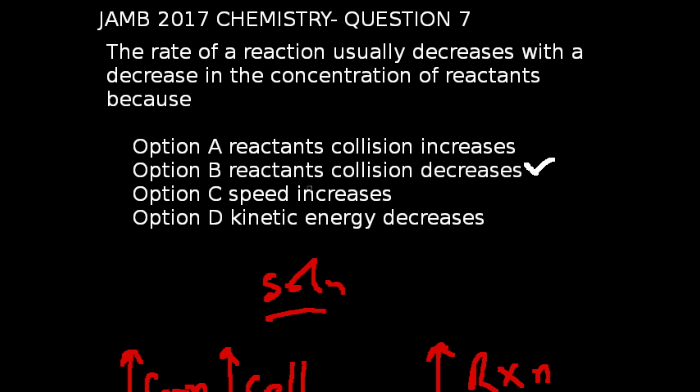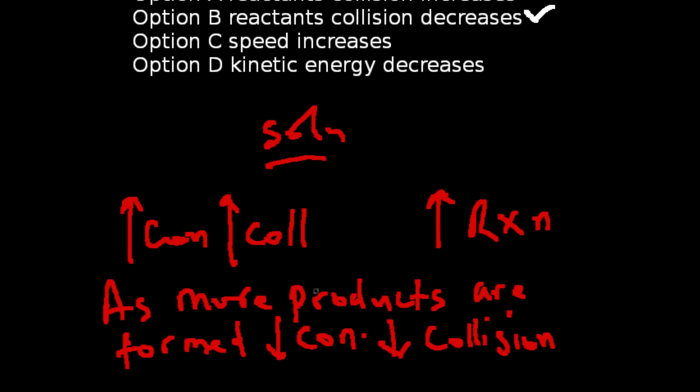Reactant collision decreases. And this is so because in a given reaction, let's say A plus B giving us B plus C, increase in the number of A and B, that is increase in concentration, leads to increase in the collision of reactants, thereby increasing the rate of reaction.